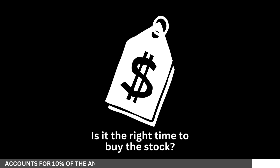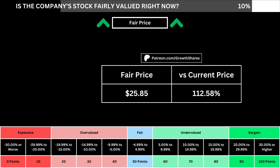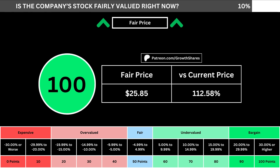But of course, we can't forget about the fair price and whether it's the right time to buy the stock. I use a discounted cash flow model taking into account a 10% margin of safety. That translates into the company's fair price and how many percentage points above or below its current price the stock is. When we compare those numbers with the table below, we can see where the company's stock lies in its intrinsic value spectrum right now.